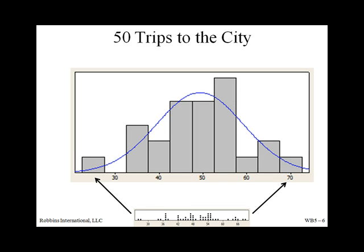Most things in nature will follow what is called the normal distribution — that distribution is represented by the blue line. An example would be the heights of adults: the highest number is in the middle, and then fewer exist as the heights get shorter or taller on either end. We'll talk a lot about the normal curve in other modules.